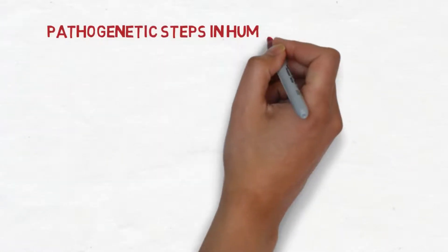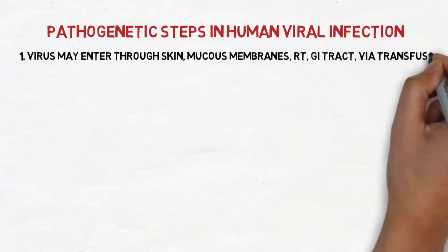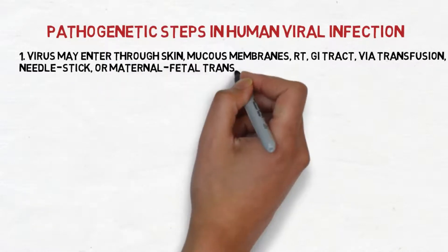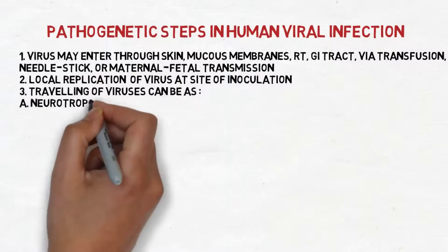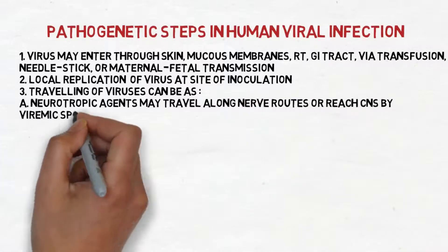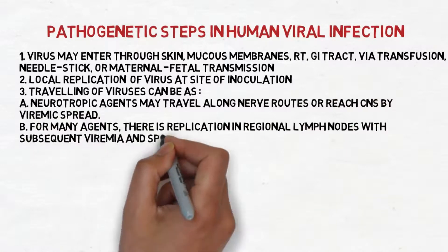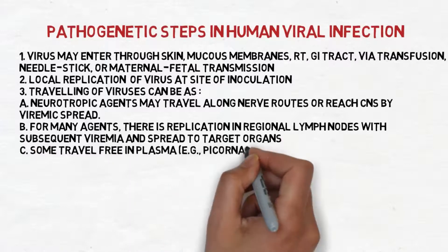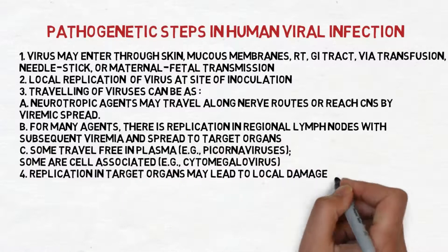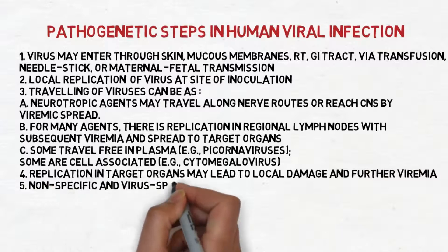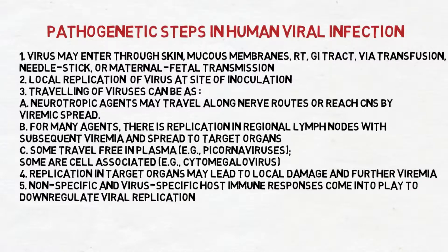Moving to the pathogenic steps in a human viral infection. The virus may enter through skin, mucous membranes, respiratory tract, GI tract, via transfusion, needle stick, or maternal-fetal transmission. Local replication of the virus occurs at the site of inoculation. Viruses can travel as neurotropic agents along nerve routes or reach the CNS by viremia. For many agents, there is replication in regional lymph nodes with subsequent viremia and spread to target organs. Some travel free in plasma and some are cell-associated. Replication in target organs may lead to local damage and further viremia. Non-specific and virus-specific host immune responses come into play to down-regulate viral replication.